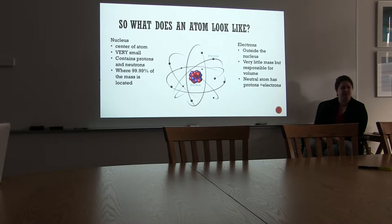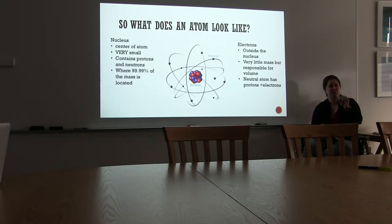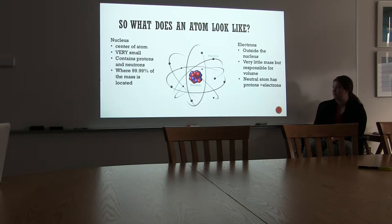Does anybody remember from your reading what the size of an electron is compared to a proton? It's 1/1,820th the mass of a proton. But it has the same amount of charge as a proton — just opposite. So it has a full negative charge but much, much smaller mass. It's kind of cool to think about.